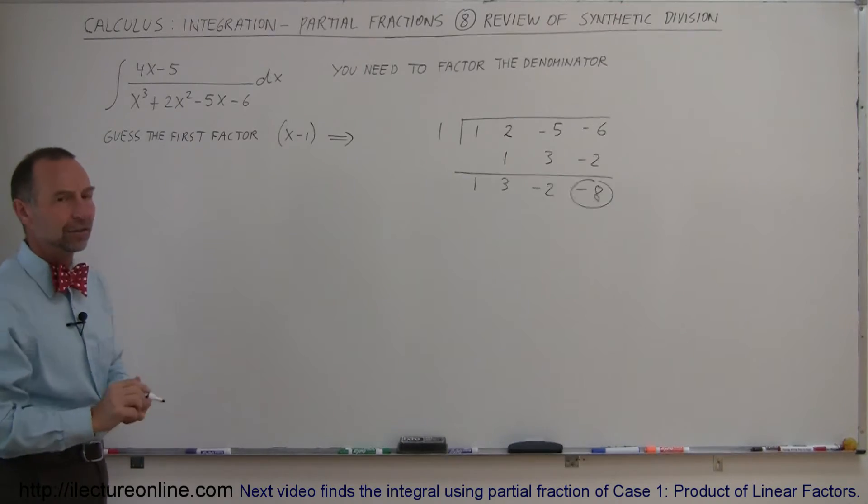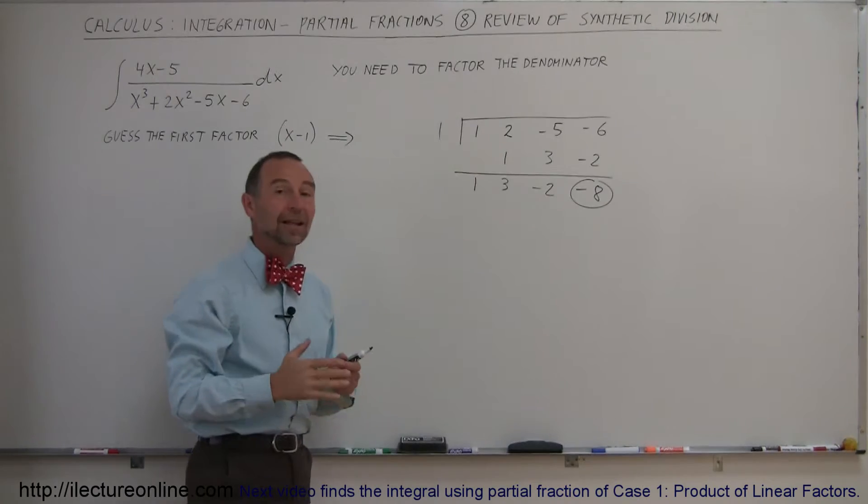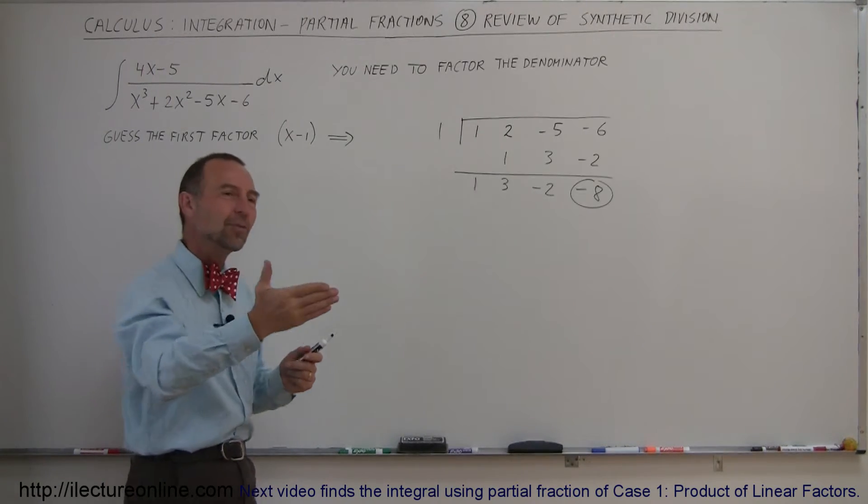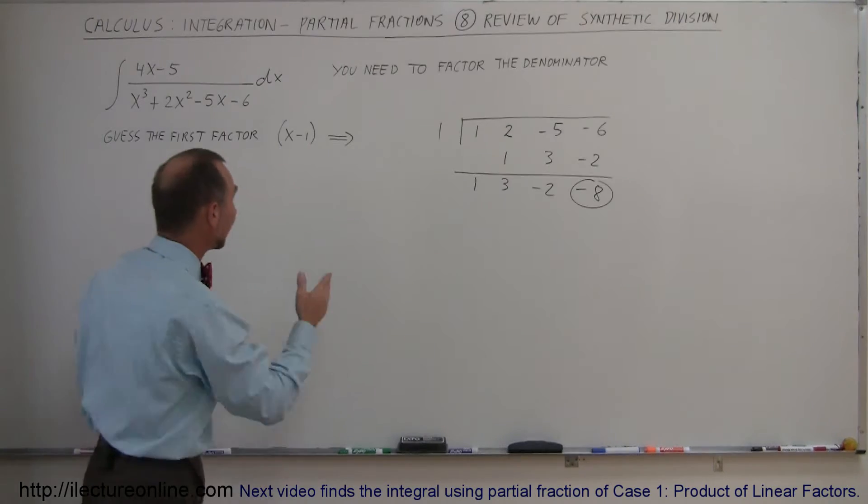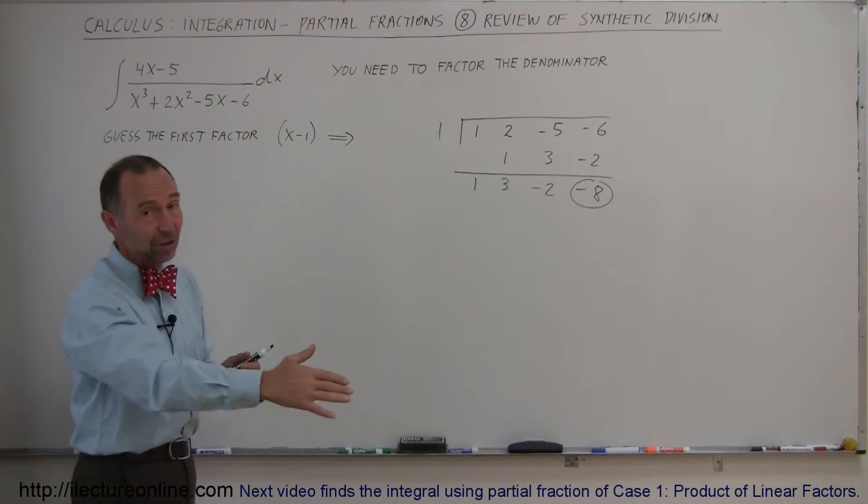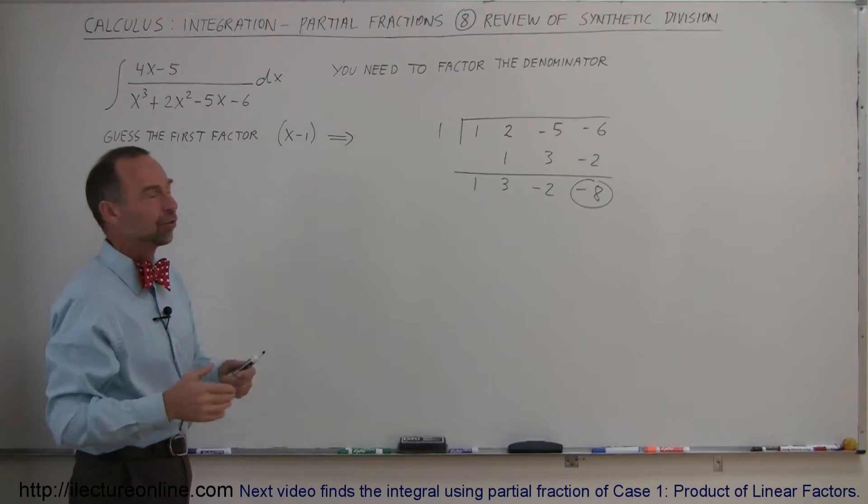Now, let's say you try the next factor and the number you get down here is maybe minus 20. That's further away from 0 than minus 8. That means you're going the wrong direction, then you must try something in the opposite direction. Maybe I tried negative 2, I get minus 20, negative 3, I get minus 40. Definitely the wrong direction. I maybe want to go to 0, plus 1, plus 2, and so forth, and just try it out.